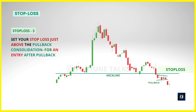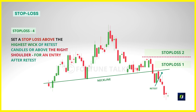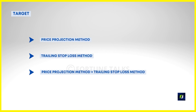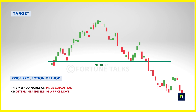If the pullback formed very close to the neckline, place the stop loss just above the neckline. If you entered after a retest, the stop loss can be placed just above the highest wick of the group of retest candles, or you can be more conservative and place the stop loss above the right shoulder of the pattern. Now we will look at how to exit from our trade for maximum profit. There are three popular techniques: the price projection method, the trailing stop loss method, and a combination of these methods.